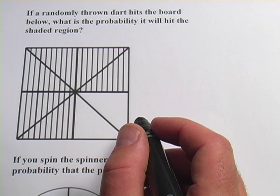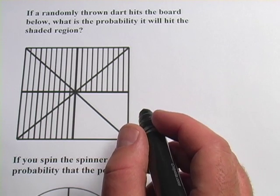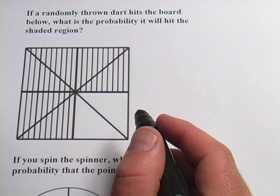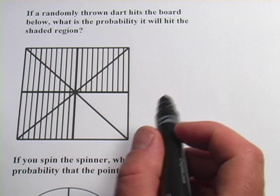Here we have some problems about probability, and probability is just figuring out the odds of something happening, the likelihood, how probable something is.